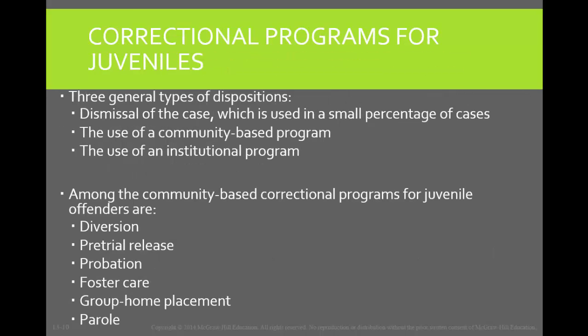When a juvenile offender goes to court, there are three outcomes that can occur. First, the charges are outright dismissed, just like in adult court, but this happens very rarely. Next, the juvenile can either be adjudicated delinquent and sent to a community-based program, or they can be sent to an institutional facility. Institutional facilities are detention facilities that only house juvenile offenders — they are separate from adults, receive treatment, and are required to continue with their education. Like adults, juveniles can be sentenced to a variety of community-based programs including probation, parole, attending a foster home, or a diversionary program.